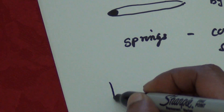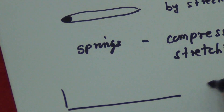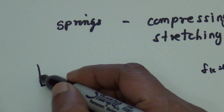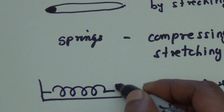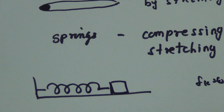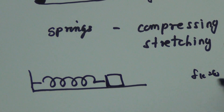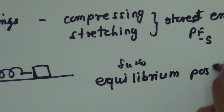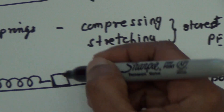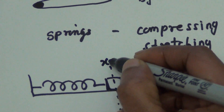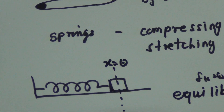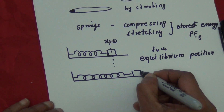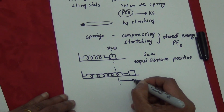Let me draw a spring on a horizontal surface and we neglect the friction, air friction or any friction. The spring is connected to a block. This is the unstretched or equilibrium position. Let's take this position as x equals zero. Now, you stretch the spring through a distance x.